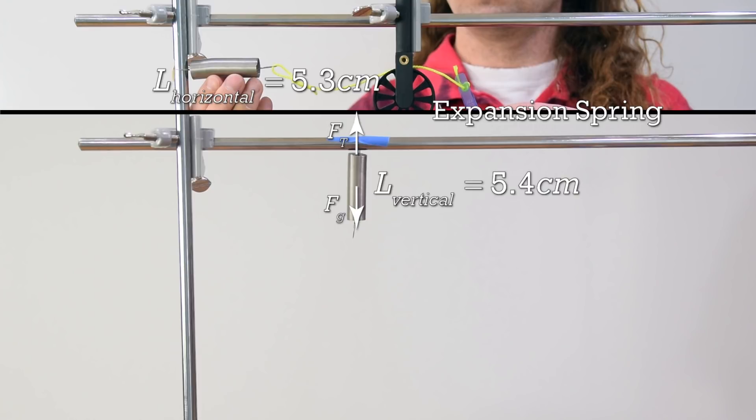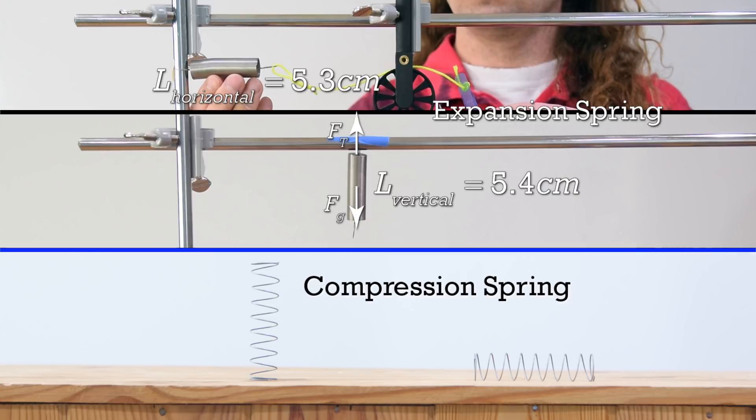The reverse happens to a compression spring. A compression spring is designed to be compressed. When this compression spring is horizontal, it has a length of 6.2 centimeters. However, when this compression spring is vertical, it has a length of 6.1 centimeters. This is because the force of gravity acting downward on the center of mass of a compression spring, along with the force normal acting upward on the compression spring, compresses the spring when it is vertical.